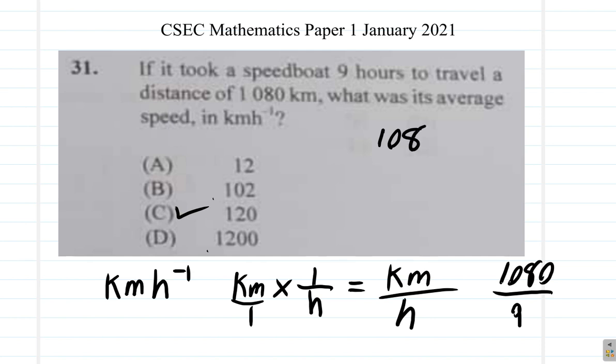1,080 divided by 9 equals... 9 into 9 one time. 9 into 10 goes one time, and 10 remaining. 9 into 18, 2. And then you have this 0 here. So it's 120. You see that. The answer to question 31 is C.